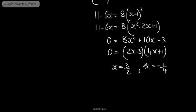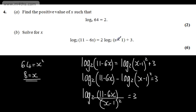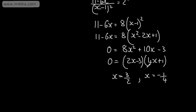We need to check these to see if they're valid. I'm going to focus on this one first, negative 1 quarter. If I substitute negative 1 quarter in here, this is going to give me a negative number. We can't take the log of a negative number for a real value so we can say that x cannot be equal to negative 1 quarter